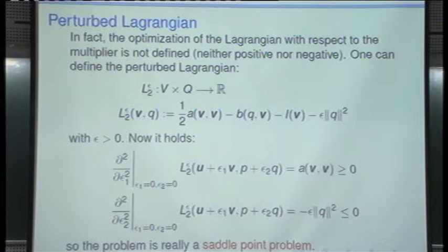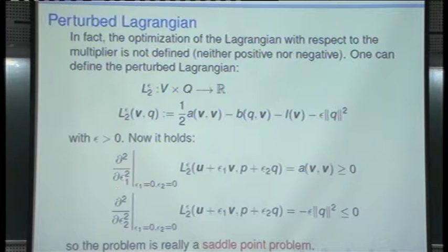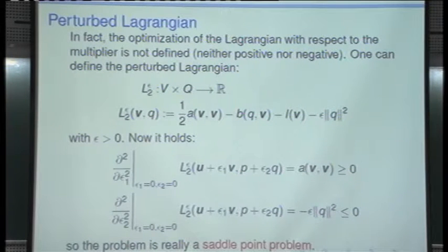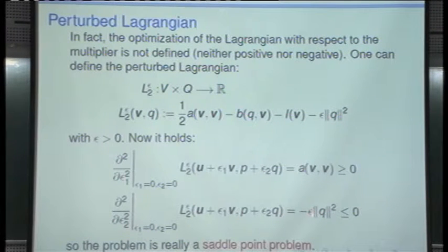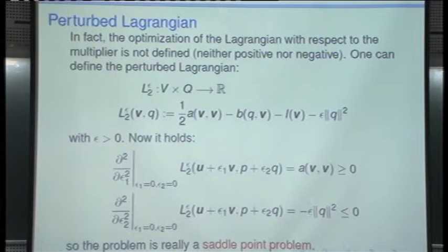So that is a regularization of the Stokes problem introduced by perturbing the associated Lagrangian. Now, what is the differential form — the boundary value problem — associated to the optimization of the perturbed Lagrangian? From the viscous term we get the same as without perturbation. From the pressure term, the same. From the divergence term, the same. The only additional term is epsilon times p_epsilon, because what we have done is test the equation against q.